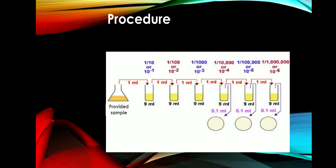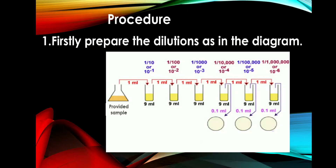Procedure: First, prepare the dilutions as shown in the diagram. Take 1 ml of the provided sample and add it to 9 ml of sterile saline. This gives a dilution of 10 to the power of minus 1.